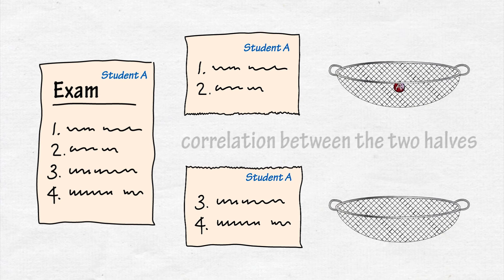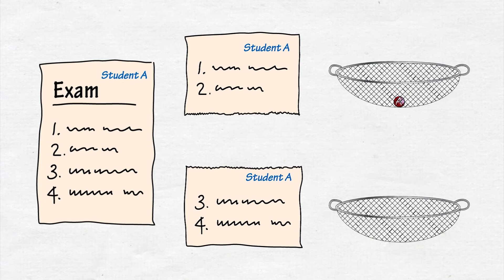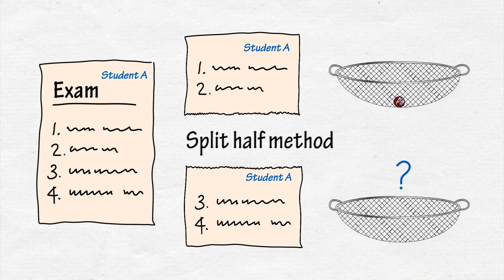Does student A, who would have failed if the exam consisted of the first half only, also fail if the second half was used, etc.? This is called the split-half method, which was popular in the days of limited computer power.